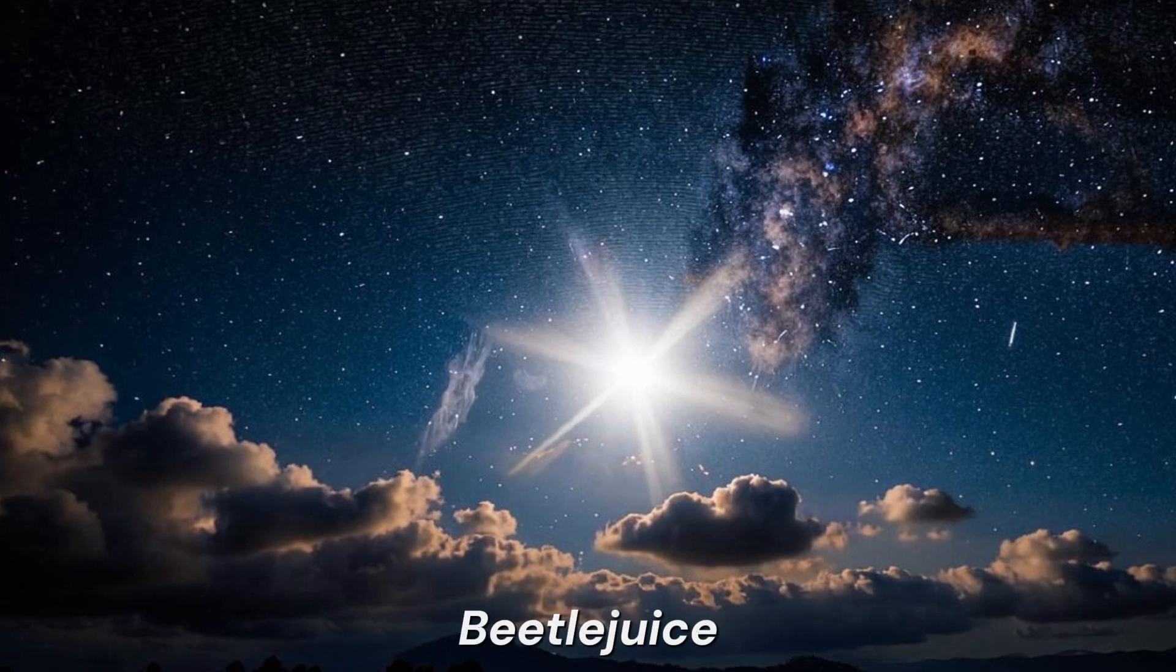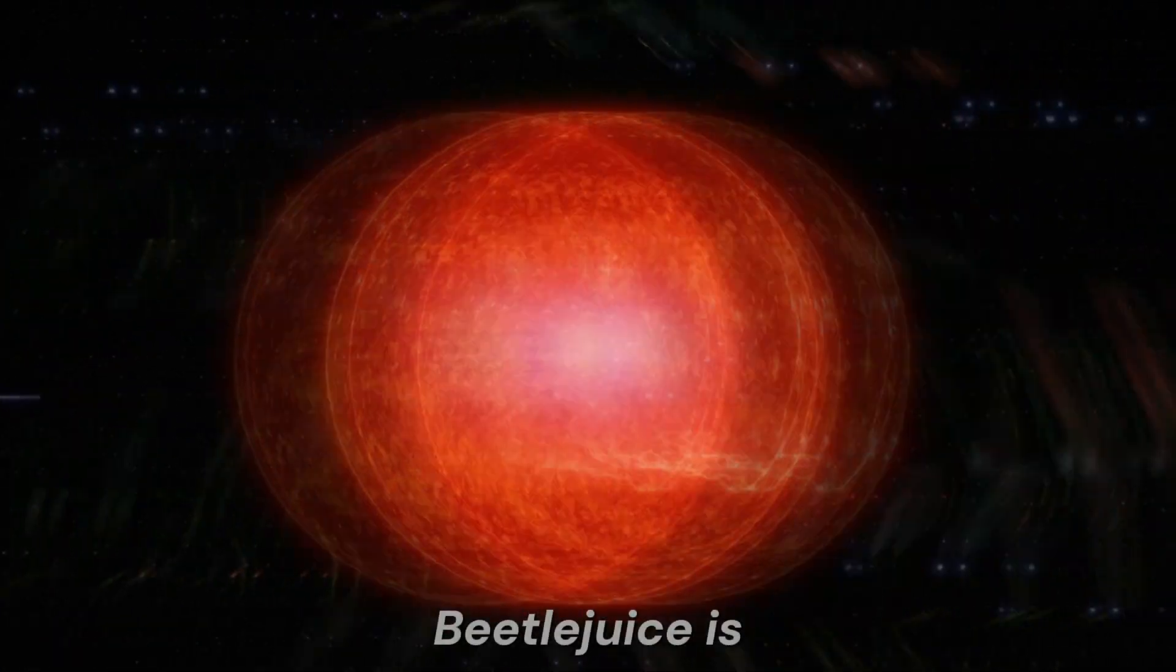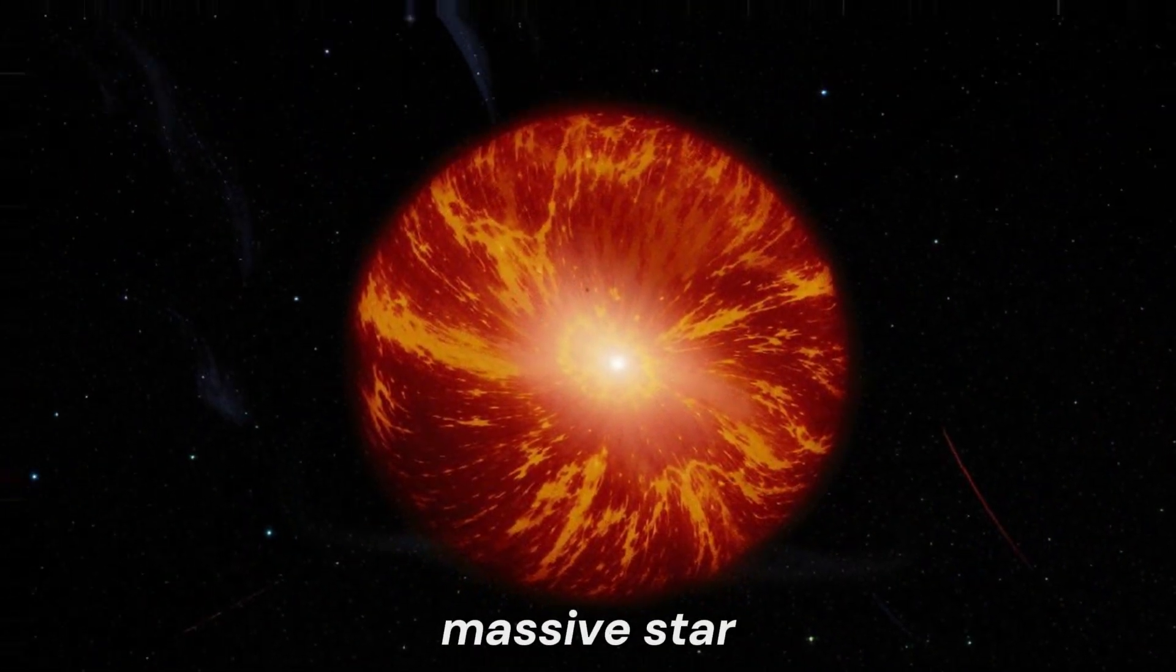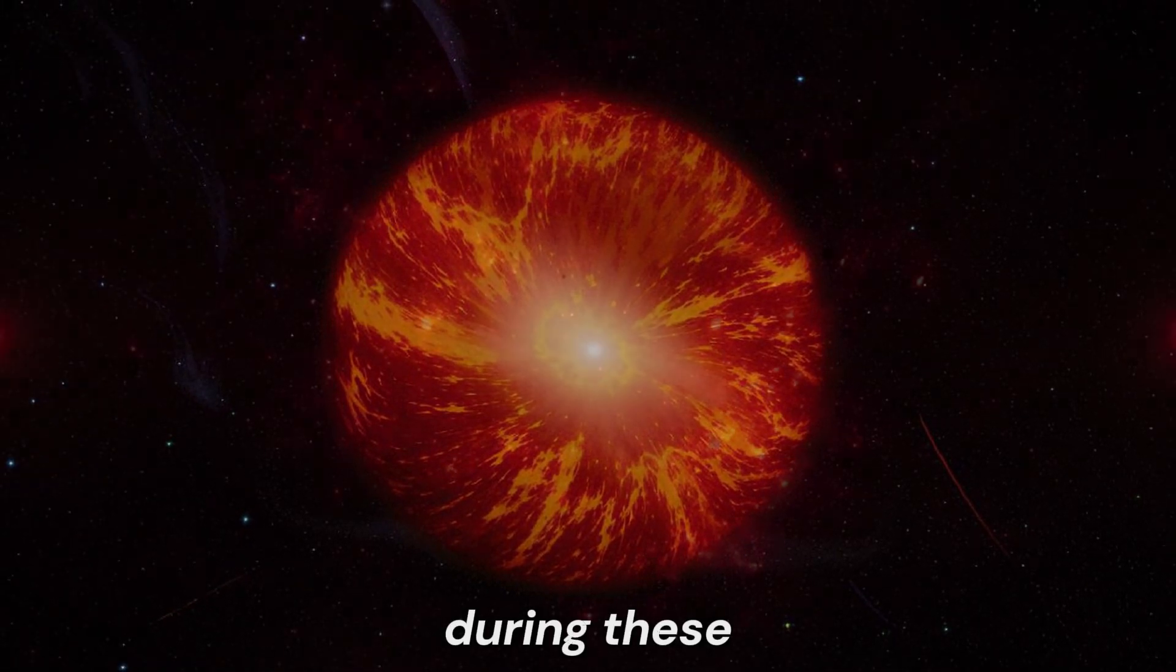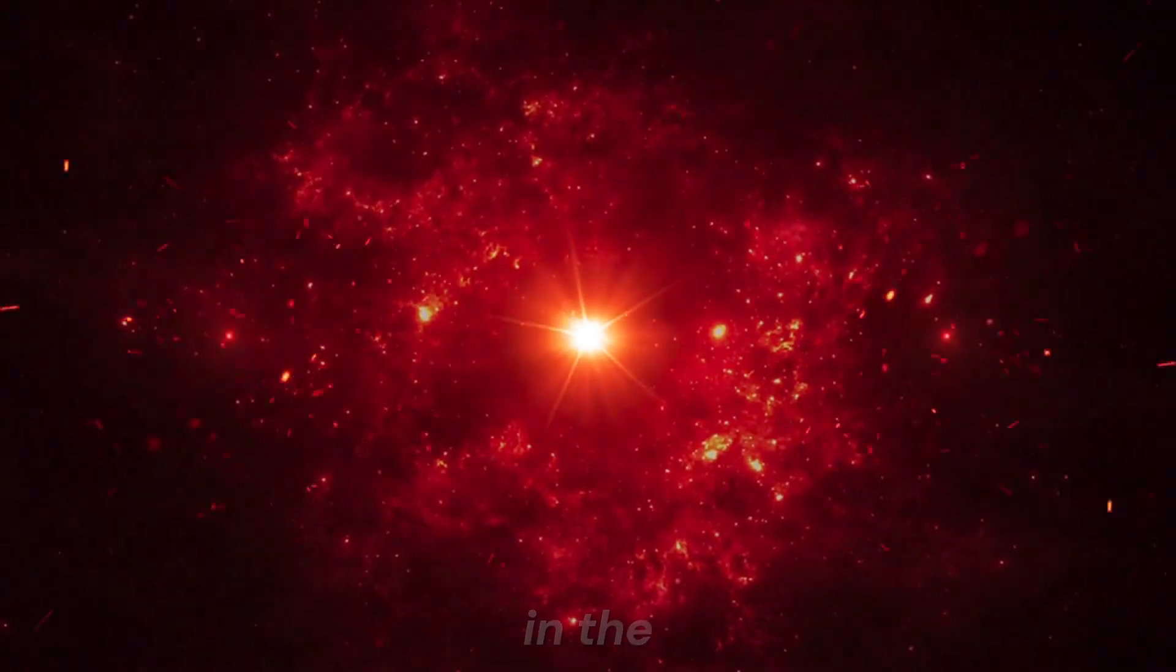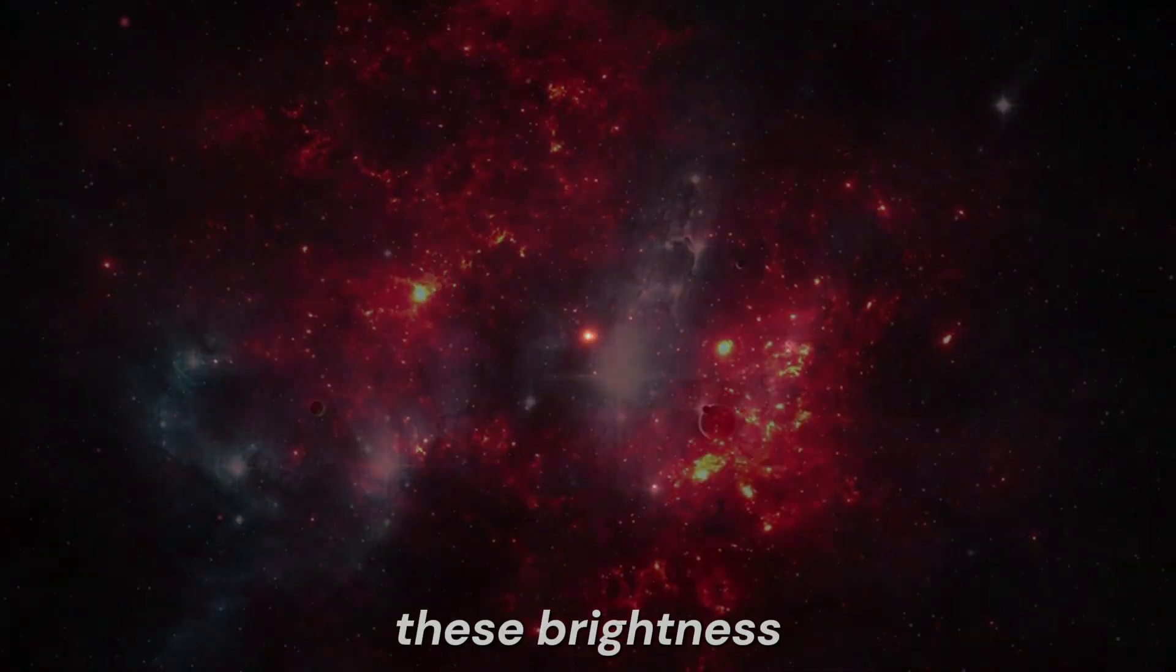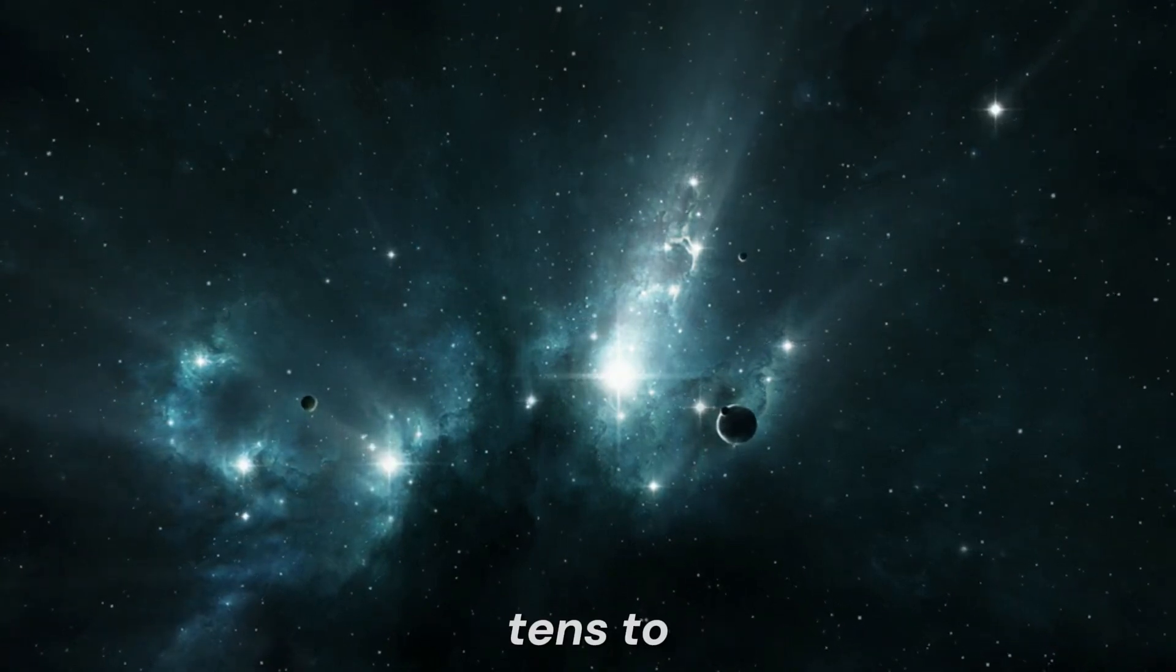The scarcity of light from Betelgeuse is not only due to the distance separating us from it. Betelgeuse is a pulsating red supergiant, meaning it's an ancient massive star undergoing expansions and contractions. During these cycles, its brightness can vary in the night sky, becoming more intense or dimmer. These brightness changes can occur over extended periods, ranging from tens to hundreds of days.